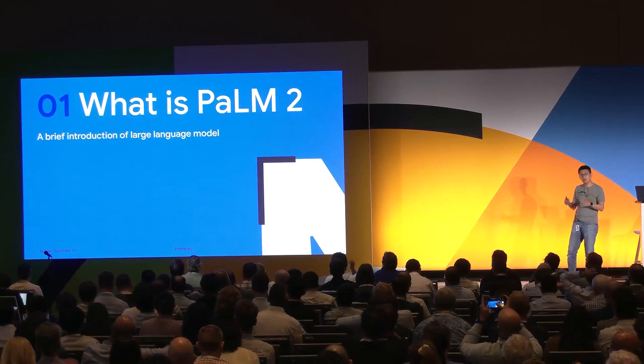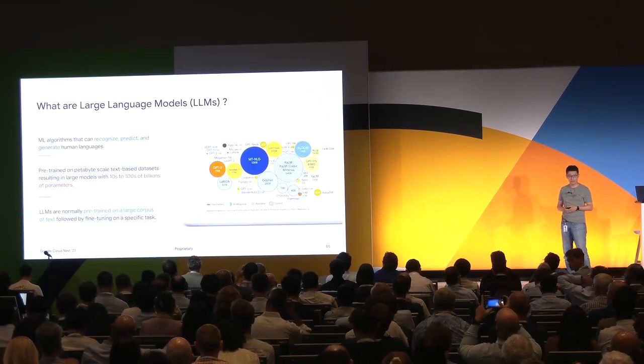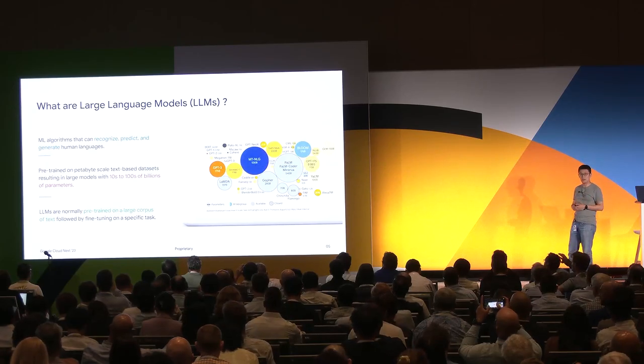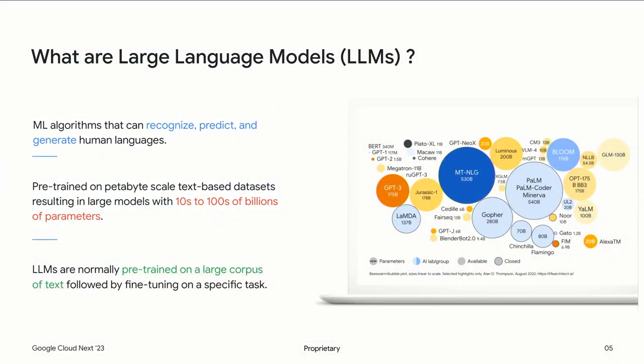Let me walk you through a brief introduction on Large Language Models and Palm 2. Traditional natural language processing models are trained to solve a specific task. For example, if you want to train a news classification model, you'd gather around 2,000 training examples of news articles and associated categories.